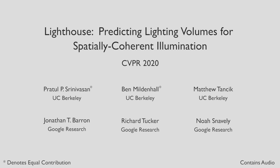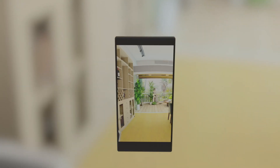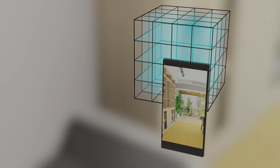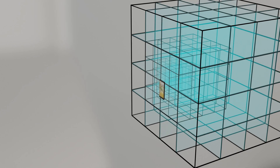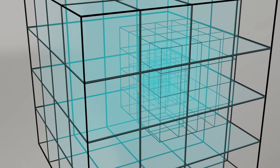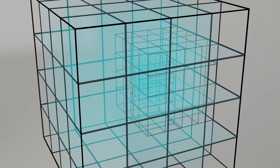We present Lighthouse, a deep learning based solution for estimating spatially coherent lighting at any 3D location within a scene. Our algorithm takes a narrow baseline stereo pair of images as input, and outputs a multi-scale volumetric representation of the scene, including both observed content and content outside the input field of view.